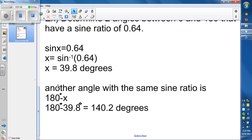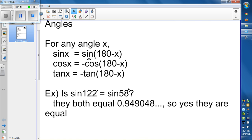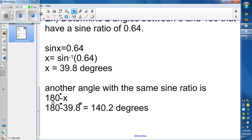Another angle with the same sine ratio is 180 degrees minus x. I know this because if I look back up to the top, sine of x is equal to sine of 180 degrees minus x. So 180 degrees minus 39.8 gives 140.2 degrees.